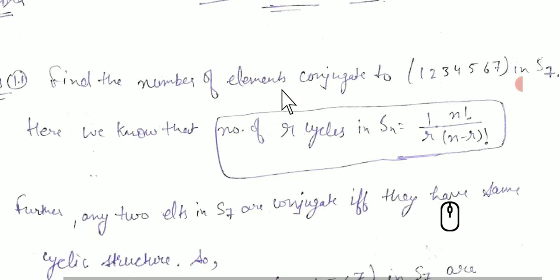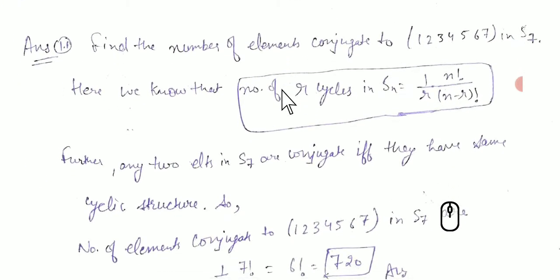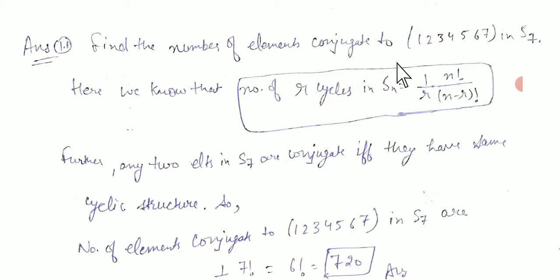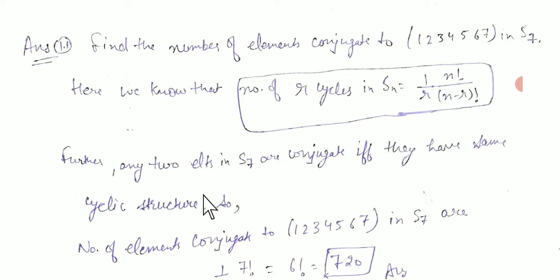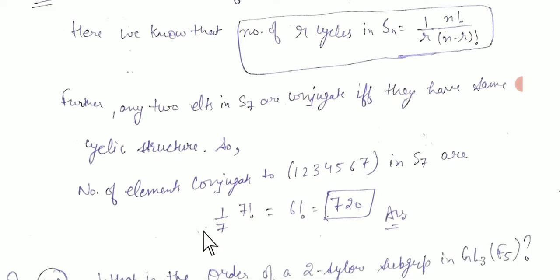Our first question is: find the number of elements conjugate to (1,2,3,4,5,6,7) in S7. We know that the number of r-cycles in Sn is equal to (1/r) × n!/(n−r)!. Any two elements in S7 are conjugate if and only if they have the same cyclic structure.